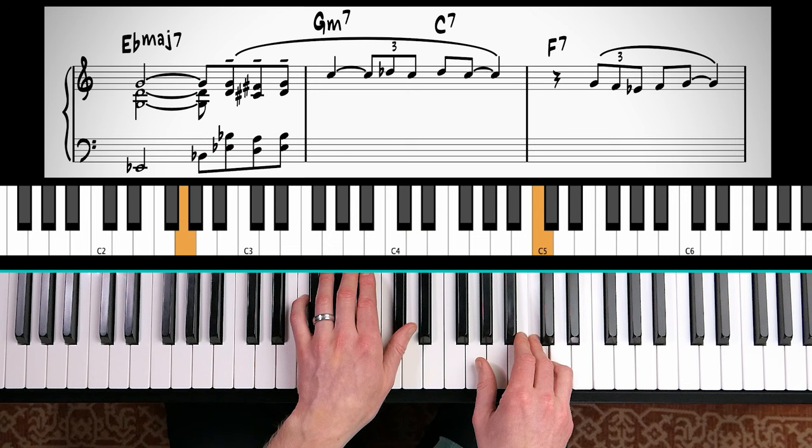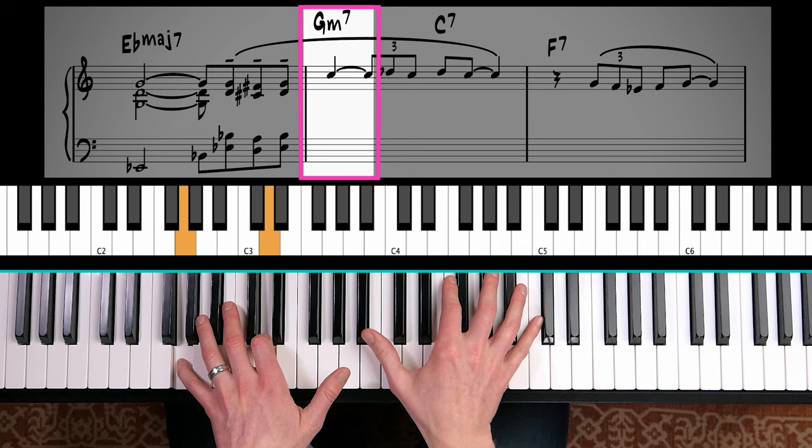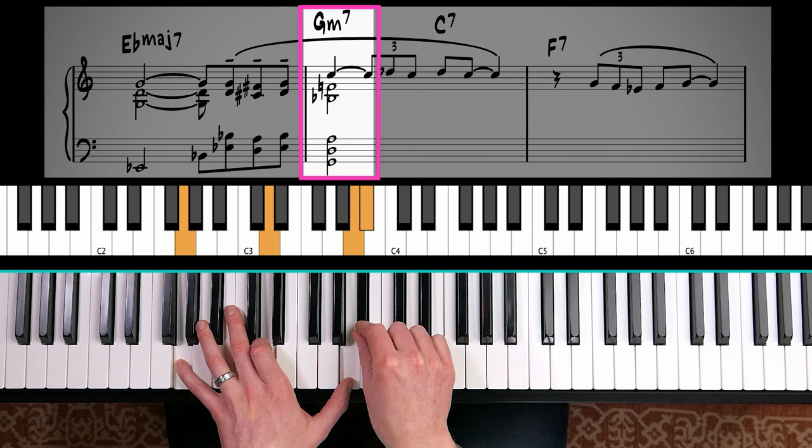Next we have a G minor seven. Now I'd actually like to play the Kenny Barron voicing here. Stack of fifths in the left hand. Find the chord's third. It's a minor third and another stack of fifths.